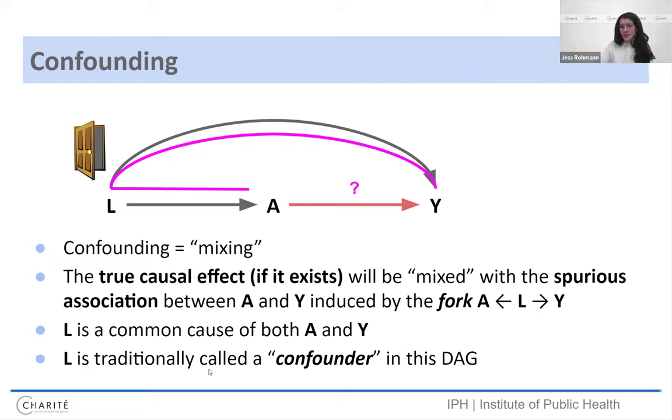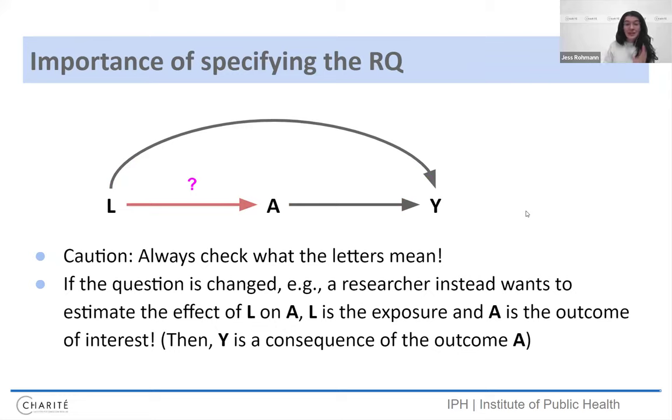And this is traditionally L in this case is called a confounder in this DAG. And it's important that we clearly specify the research question because I want to point out that if we change our question, if it's no longer what's the effect of A on Y, but what's the effect of L on A, now you'll see that we don't have a confounding variable for this effect. We actually just have a common consequence, which is Y. So depending on the question you're asking your confounders change. So I don't know how much sense it makes to call L always a confounder. If we have been a different question, all of a sudden L is our exposure. A is our outcome and Y is some descendant of both the exposure and the outcome common consequence.